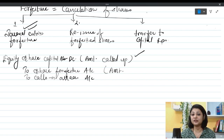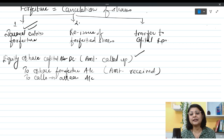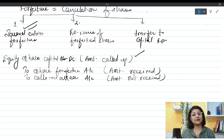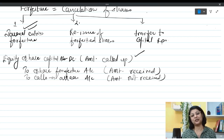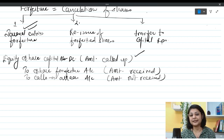In the Share Forfeiture account, the amount received by the company from the shareholder is credited. Under Calls in Arrears, the amount not received is recorded. I'll teach calls in arrears in detail along with the question, clubbing both concepts together, as calls in arrears is a simple topic. Let's take an example to understand how to pass the forfeiture entry.